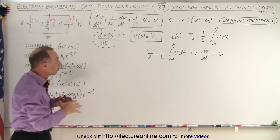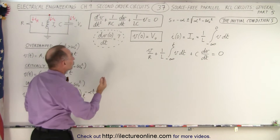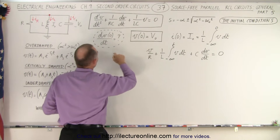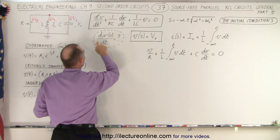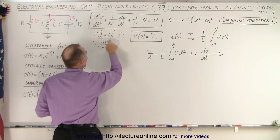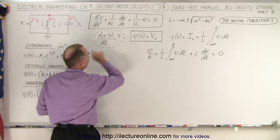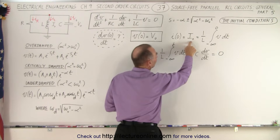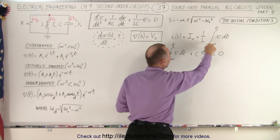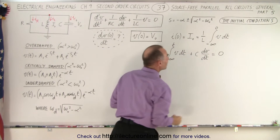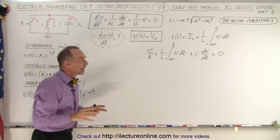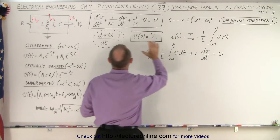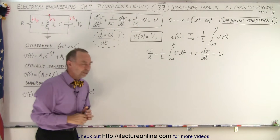From those we're supposed to find the voltage when time is equal to zero, and we need to find the change in the voltage with respect to time when time is equal to zero, because after all the current in our inductor is defined as 1 over L times the integral of V dt. So we're going to need to find the derivative of the voltage with respect to time when time is equal to zero.